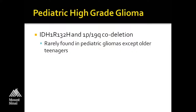The main important difference is that IDH1 and IDH2 mutations, as well as the 1p19q codeletions, are rarely found in pediatric gliomas except in older teenagers. You will occasionally hear about cases, but by and large, under the age of 15, it is very unusual to find an IDH mutation or the classic 1p19q codeletion.